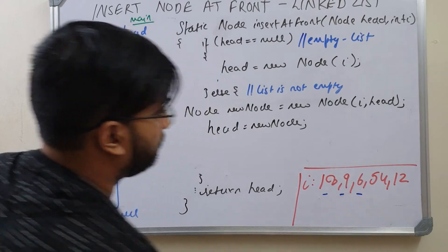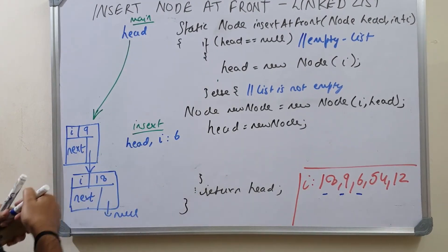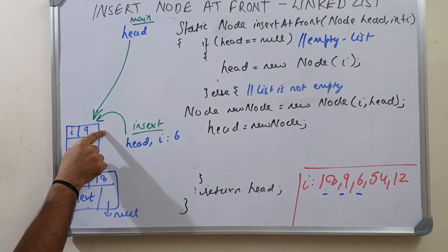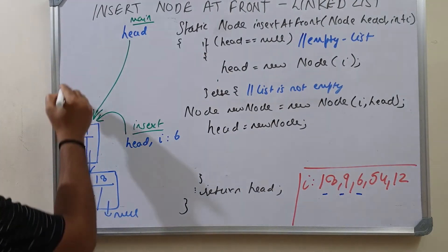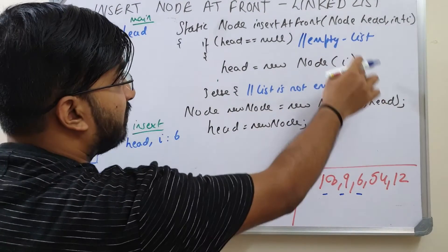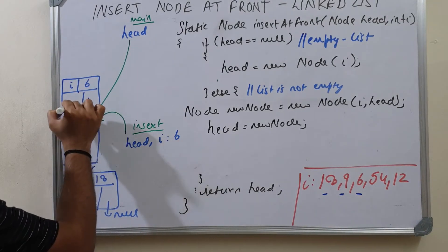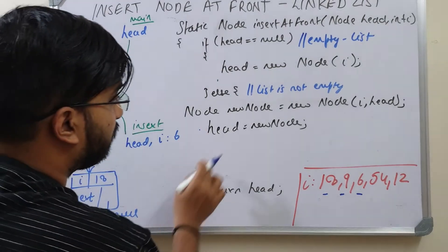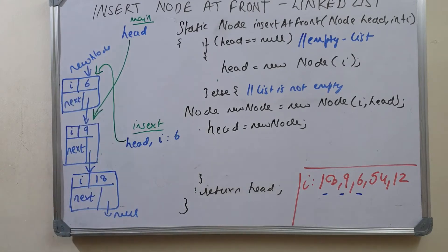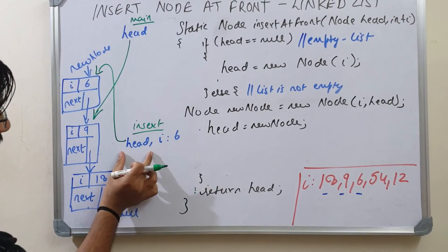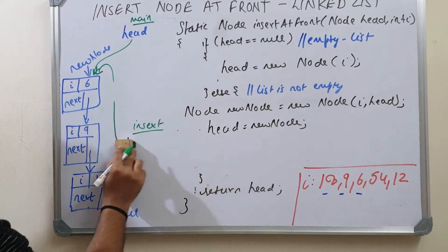Next we insert i equal to 6. Inside insert, head is pointing to the location with 9 — not null — so we go to the else part. Node newNode equals new node with i equal to 6 and next pointing to head. Then head equals newNode, so head in insert points to this new node location. When we return, head in main points here. We lose reference to local variables, so the list is now 6 → 9 → 18 → null.